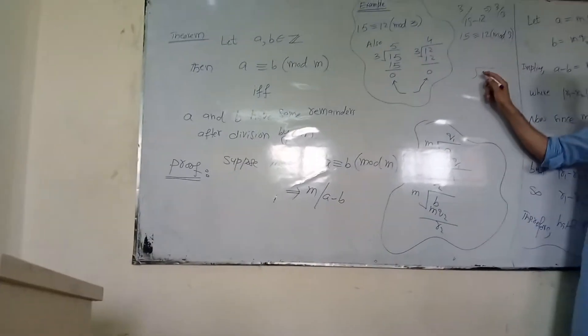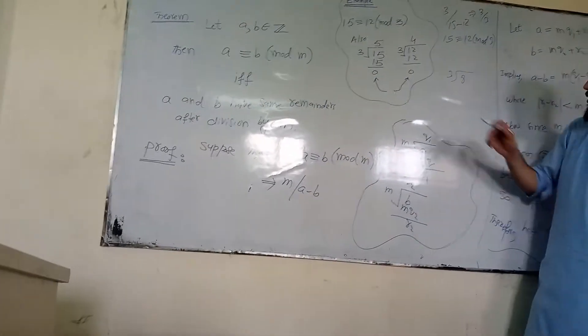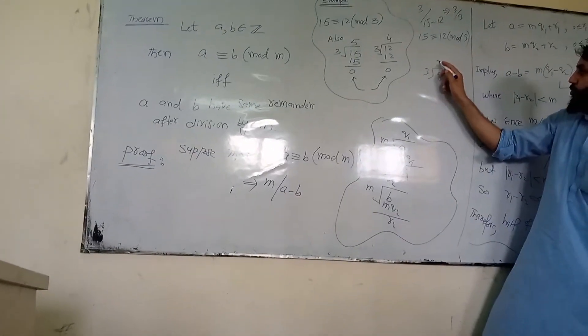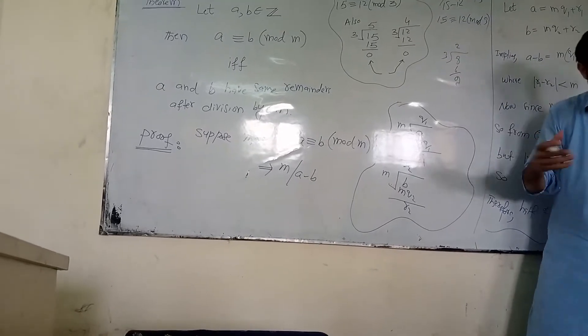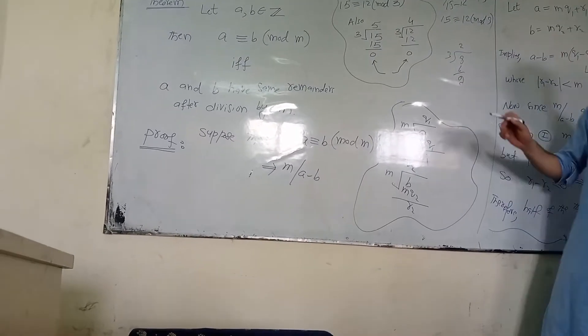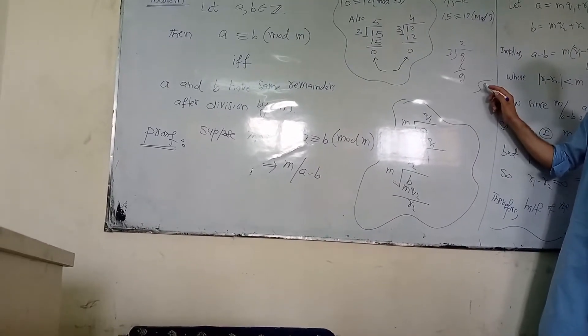Take it out. For example, 8 mod 3: 4 times 3 is 12... actually 2 times 3 is 6, remainder 2. What is the number? For example, 11.